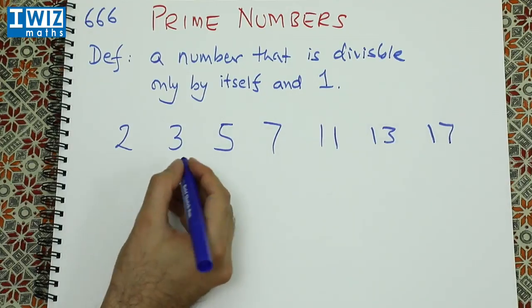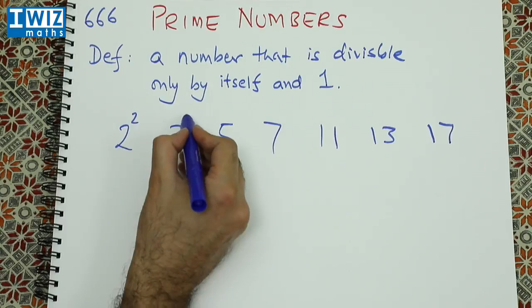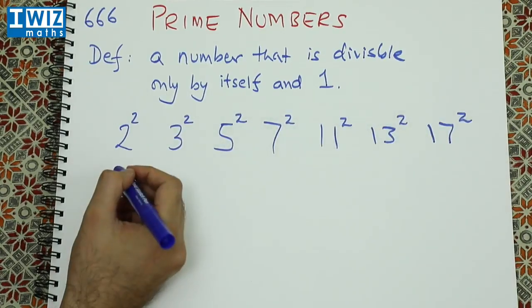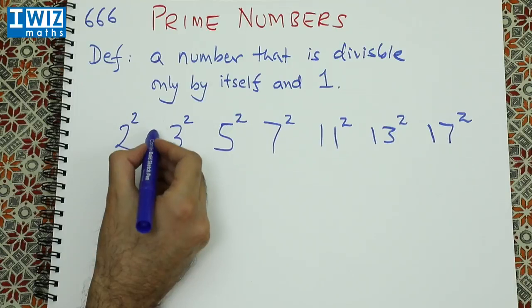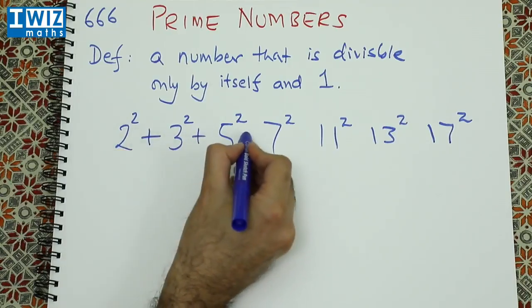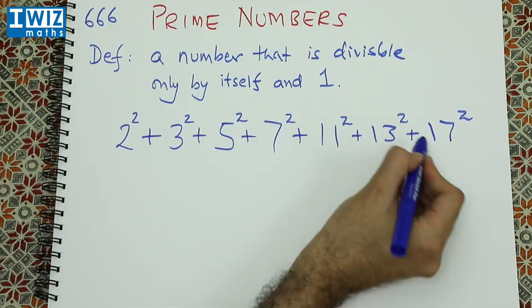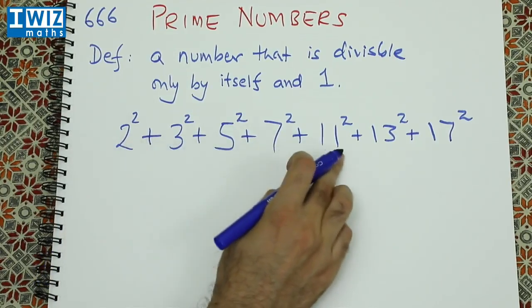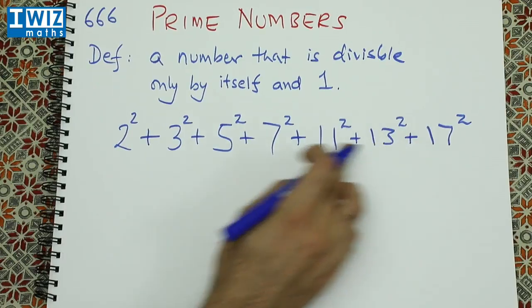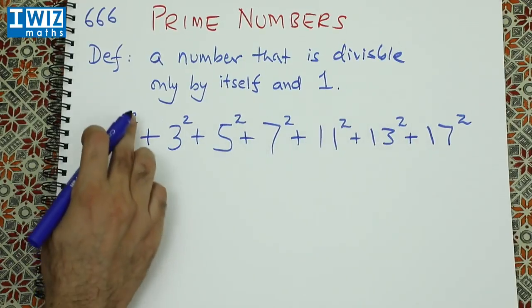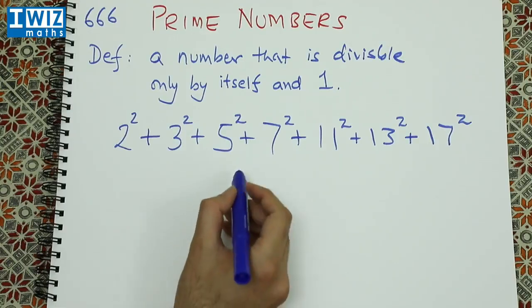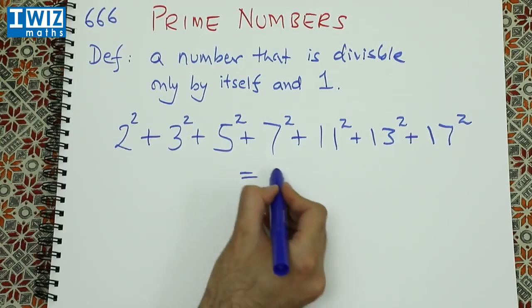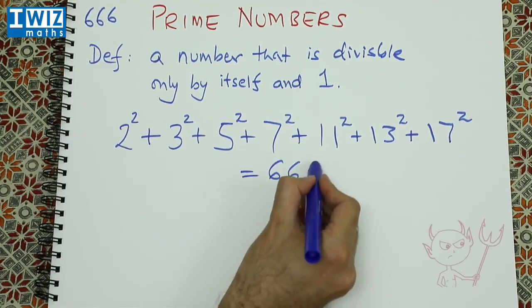Now let's go ahead and square them and add them all up. So essentially what we have here is the sum of the first 7 primes. These are the first 7 primes—we've squared them all up and added them all up. And when you do that, guess what we get? We get 666.